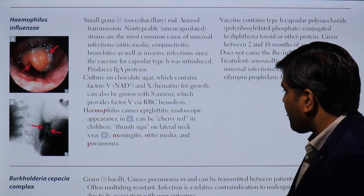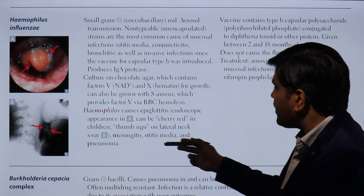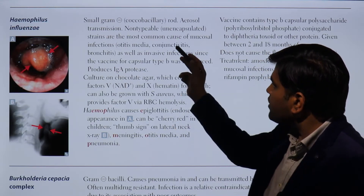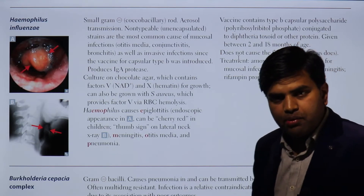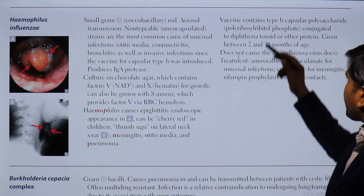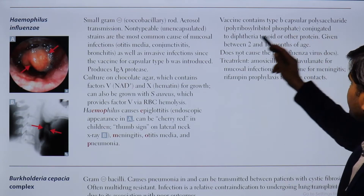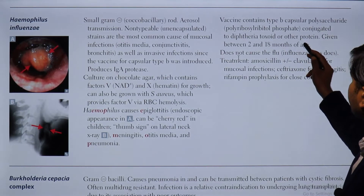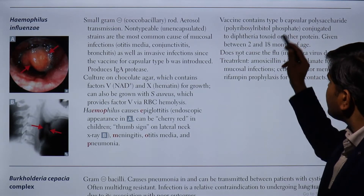Haemophilus influenzae is also responsible for meningitis and pneumonia. Otitis media, conjunctivitis, and bronchitis are caused by the non-typeable, non-capsulated strain. The vaccine contains type B capsular polysaccharide — polyribitol phosphate — conjugated to diphtheria toxoid and other proteins, given between 2 to 18 months of age.